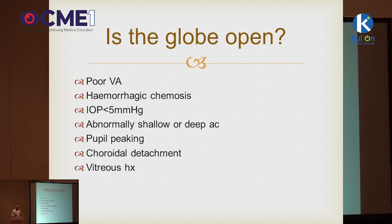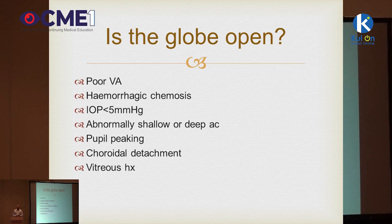Often you'll understand if someone has a penetrating injury based on history — for example, an explosion or a stick thrown into the eye. But you need to go beyond that and determine if they also have a ruptured globe, because the two conditions can coexist. Signs suggesting a ruptured globe in addition to a penetrating injury include poor visual acuity, which may suggest something more than just a corneal laceration.